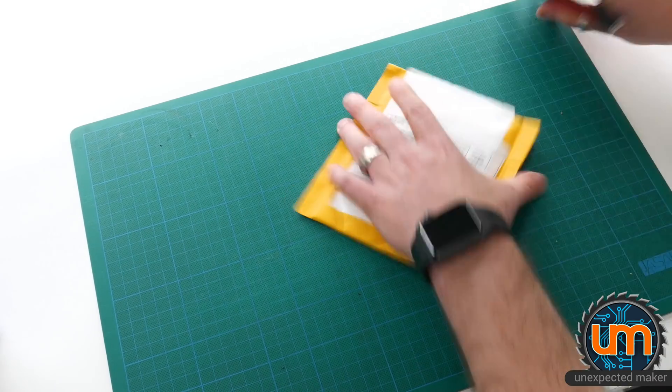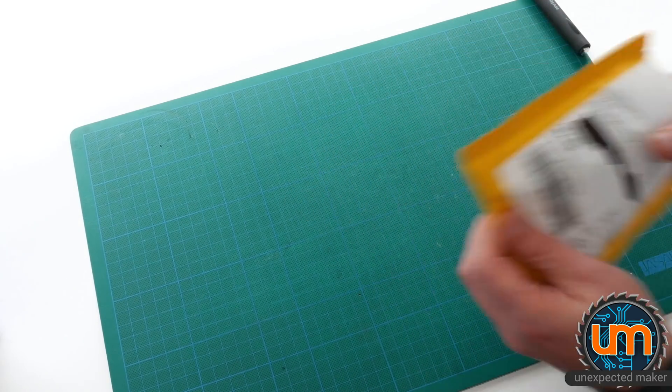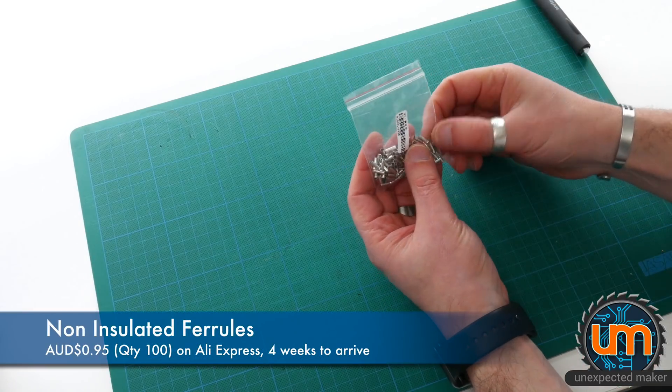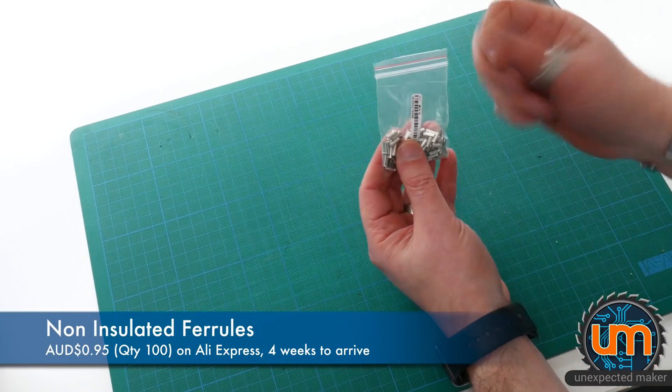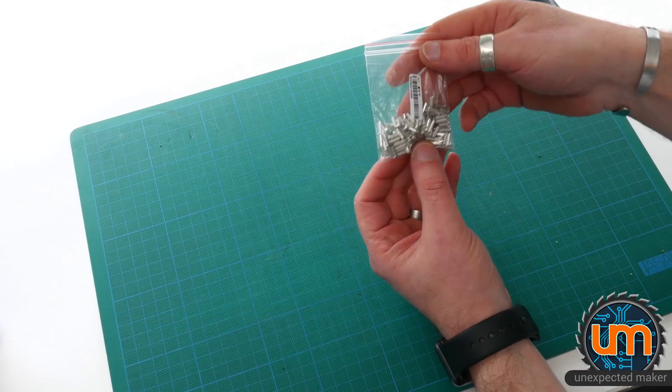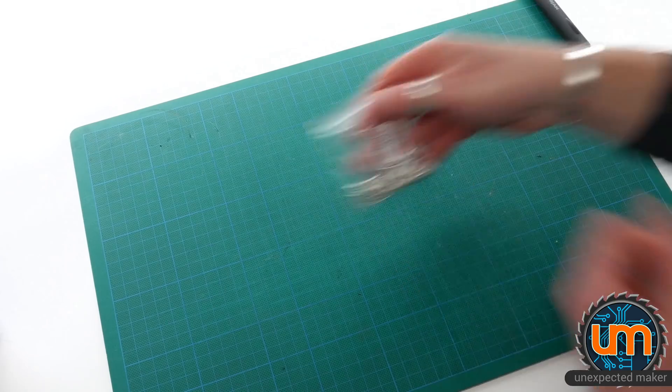Cable ferrules. Ferrules. I don't even know how to pronounce that. A bag of ferrules that I can stick on the end of my wires and crimp them to make them stronger. I'm going to see if I need this for my Reflow Master construction assembly. Cool.